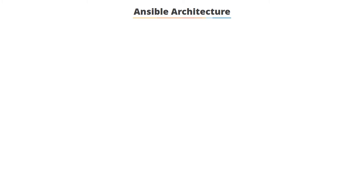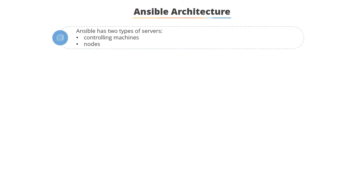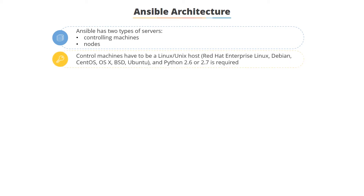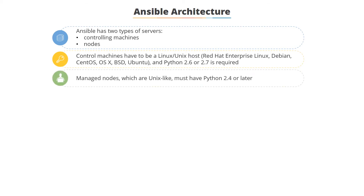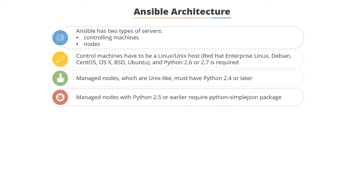Ansible can have two different types of servers: controlling machines and nodes. Controlling machines must be a Linux or Unix hosted environment with Python 2.6 or 2.7. Managed nodes, which are Unix-based, must have Python 2.4 or later. For nodes with Python 2.4 or earlier, the simplejson package is also required to work with Ansible.